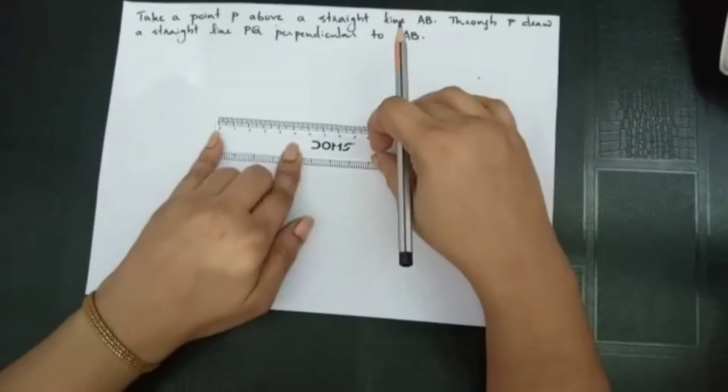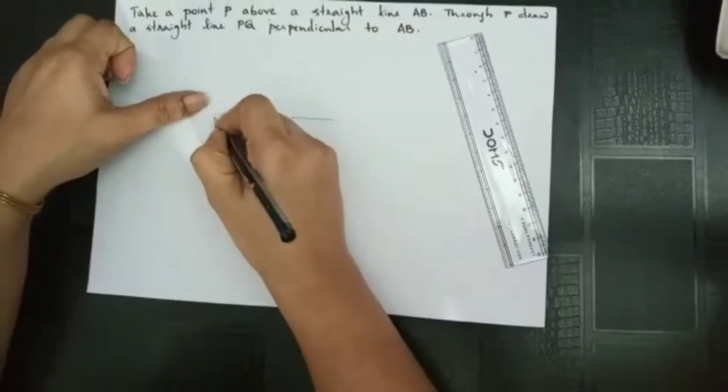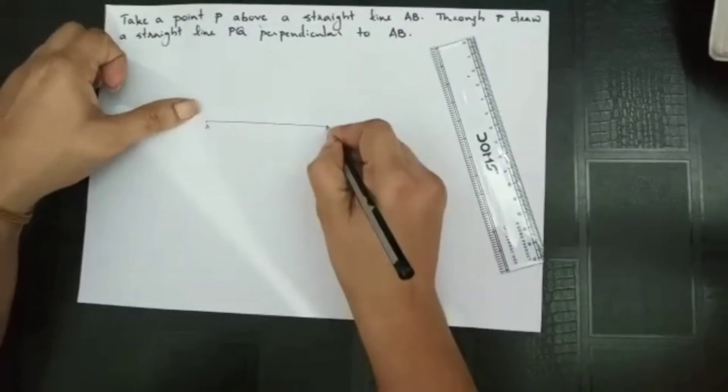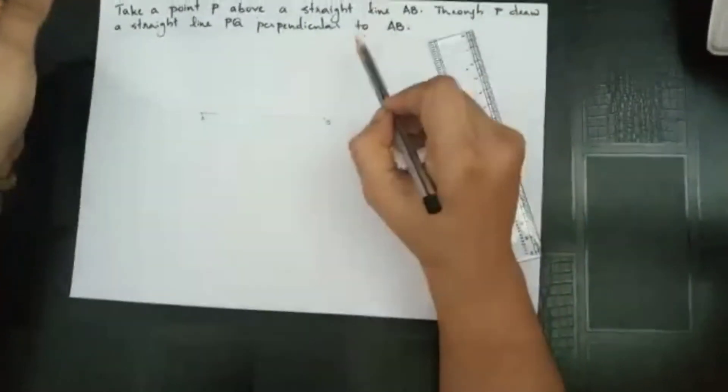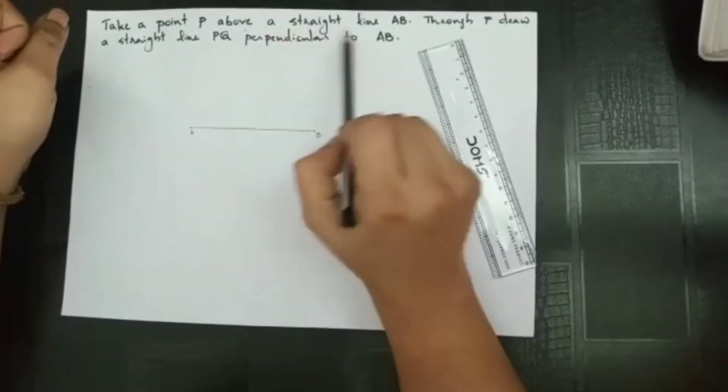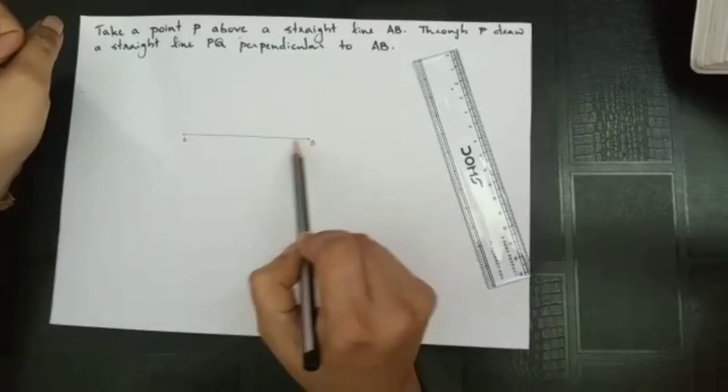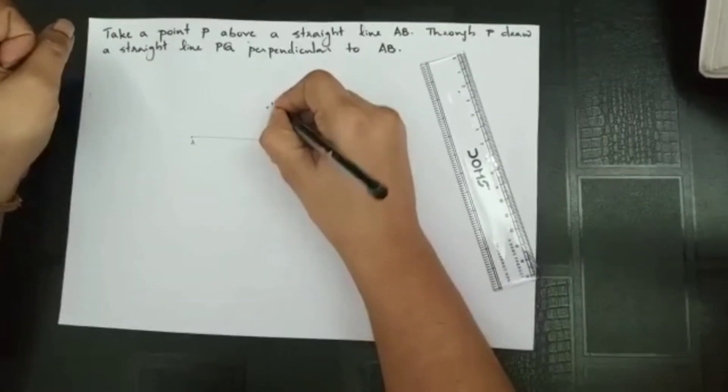So the next thing is, you have to mark the point as A and this point is B. And here in the question, it is also given that P is a point above a straight line. This above the straight line, there is a P. And just imagine this is the point P.